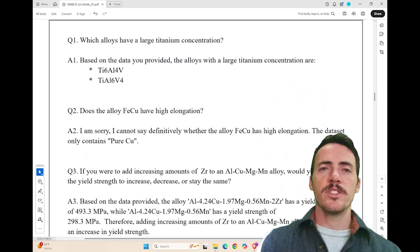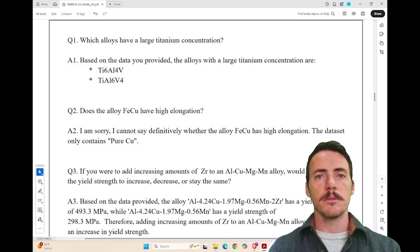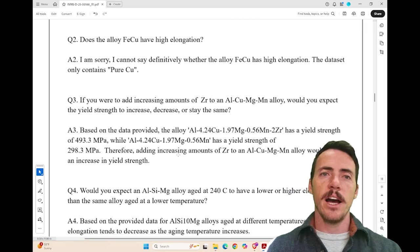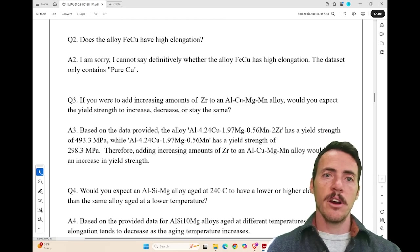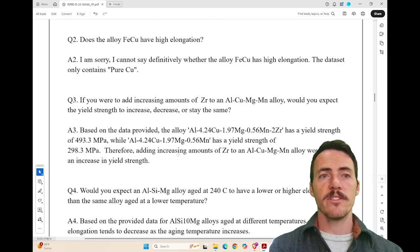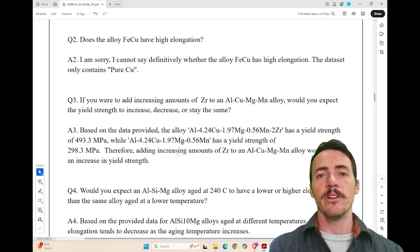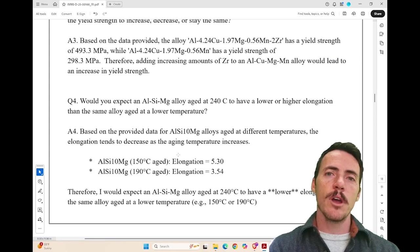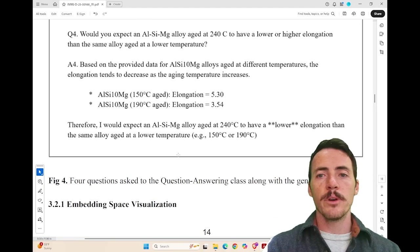Then when it comes to the question and answer, here's some examples. Which alloys have a larger titanium concentration? It's able to pull a couple of those out. Does the alloy FeCu have high elongation? And it says, I'm sorry, I cannot say definitively whether it does. The data set only contains pure carbon. It doesn't have this iron alloy. So it does a pretty good job of providing correct answers, demurring when it doesn't have the context to provide the answer. This is pretty slick.